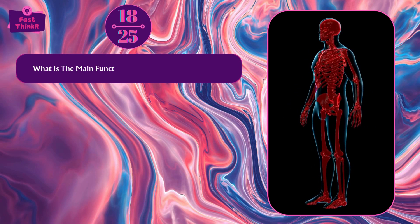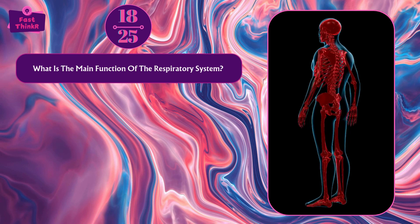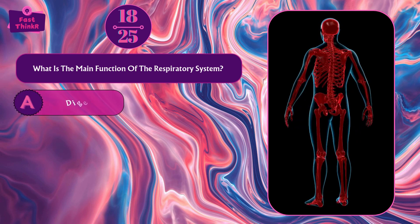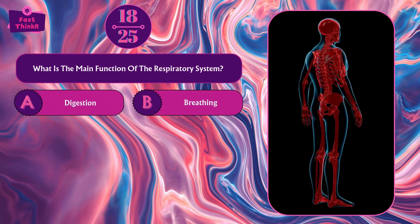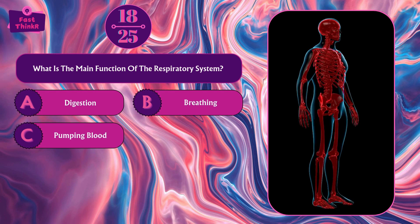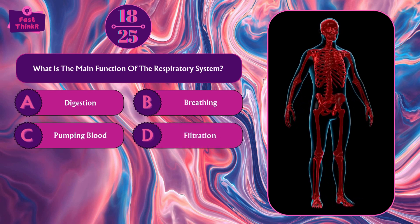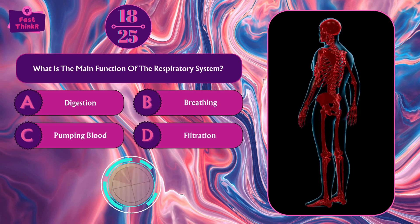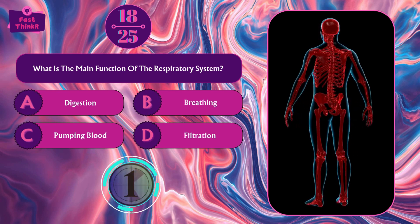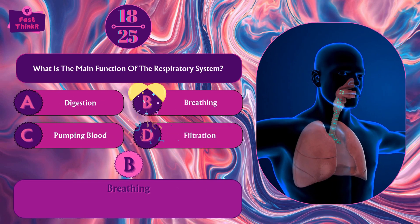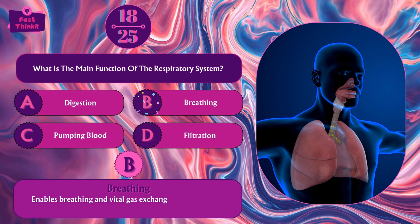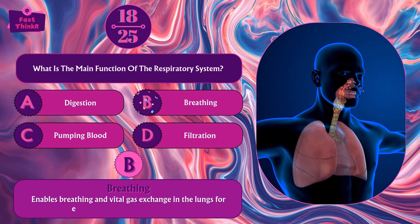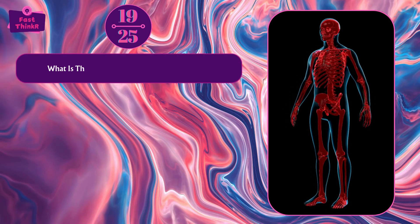What is the main function of the respiratory system? Digestion, breathing, pumping blood, or filtration? Option B — breathing. The respiratory system enables breathing and vital gas exchange in the lungs for essential physiological functions.